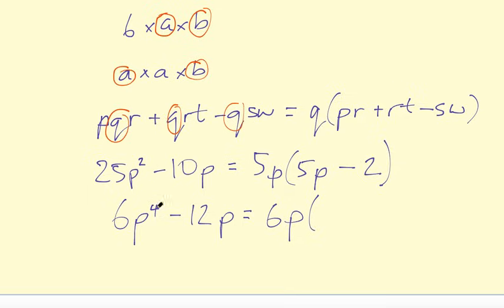And then if I take 6P out of 6P to the power of 4, remember that's just P to the power of 4, not 6 to the power of 4 as well. So I've got P to the power of 3 left. And then minus 2, 12 divided by 6 is 2. And the P is in the common factor. So that's the factorization of that term, 6P bracket P to the 3 minus 2.